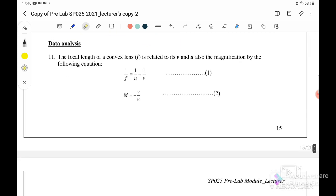Next, we go through data analysis. Number eleven: the focal length of the convex lens f is related to v and u and also the magnification by the following equation. So here they give you equation 1: 1 over f equals 1 over u plus 1 over v. And the magnification is given M equals negative u over v.